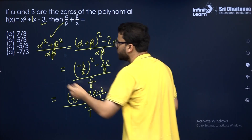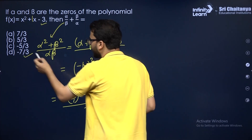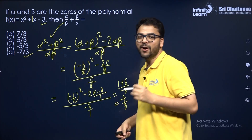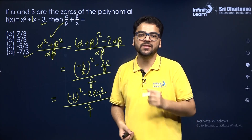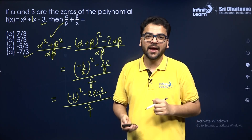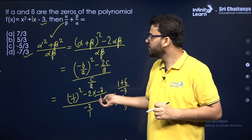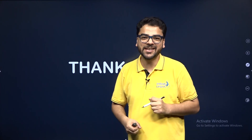So the answer is −7/3. I hope it is clear. These are all the MCQs we needed to discuss in this chapter.